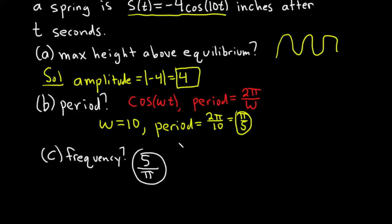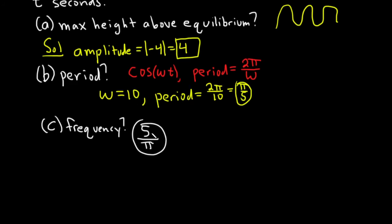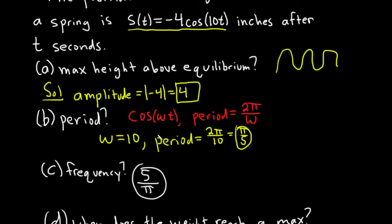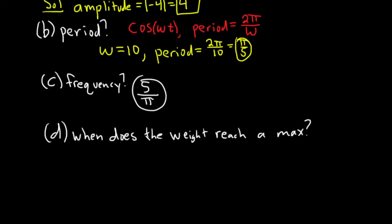And then part d is perhaps the most interesting part. We want to know when does the weight reach its maximum height. When does it reach a max? When's the first time that that happens? So t is time. And so our original function, s of t equals negative 4 cosine 10t.